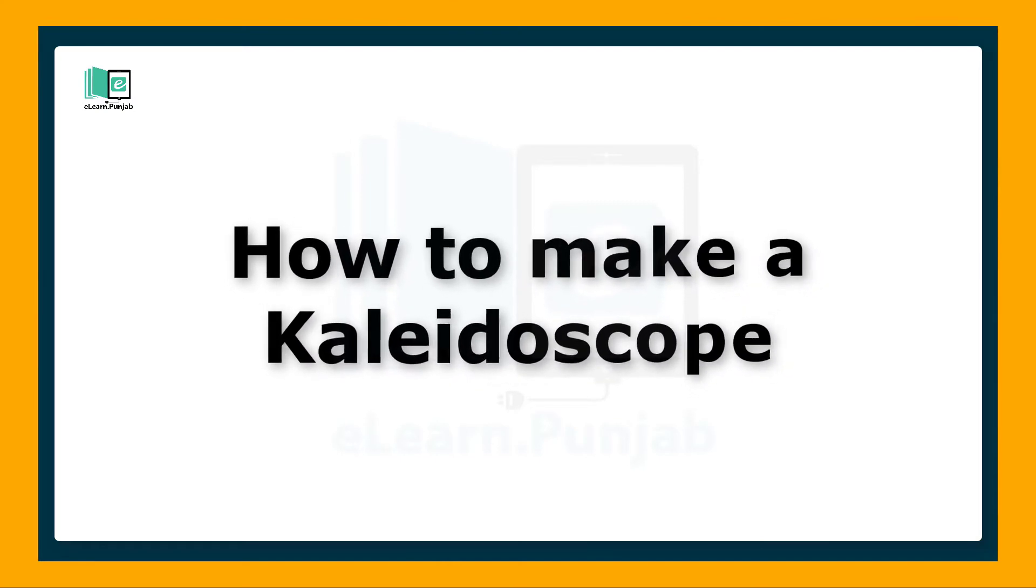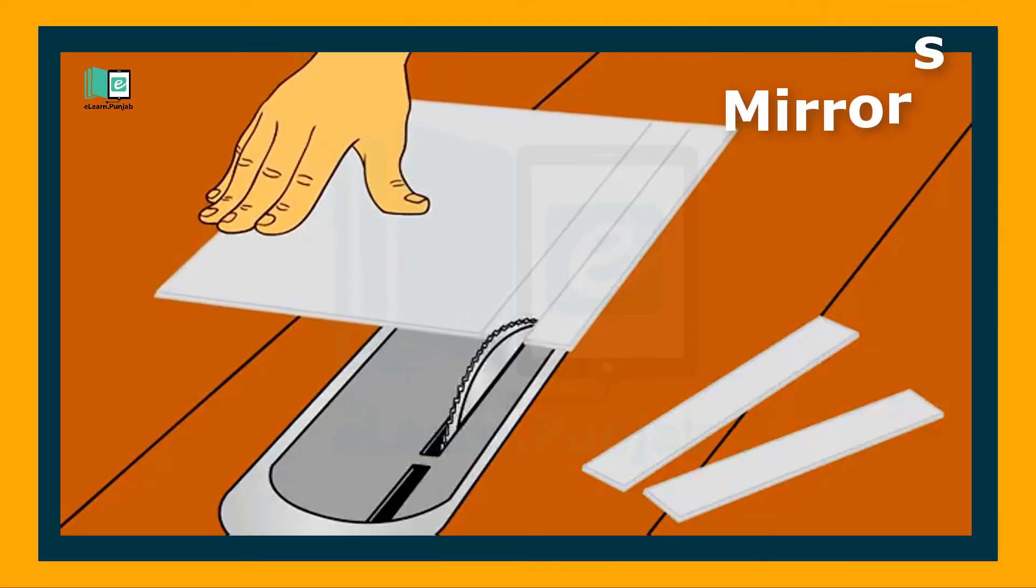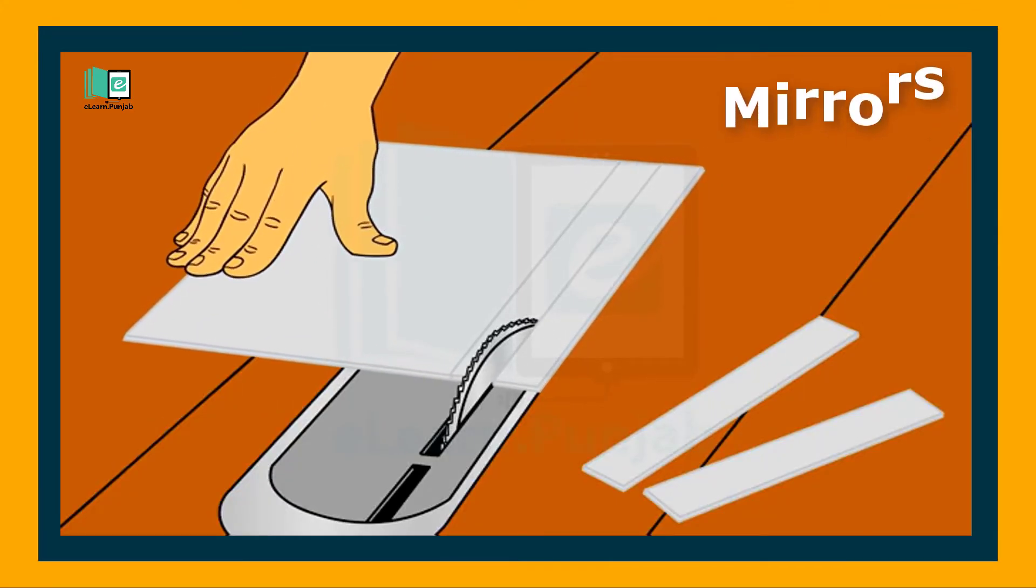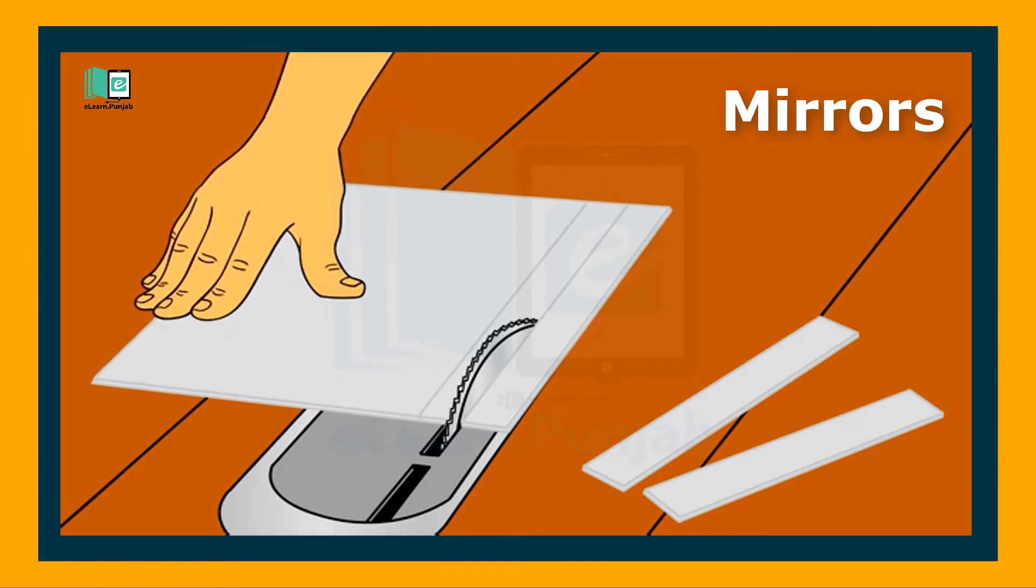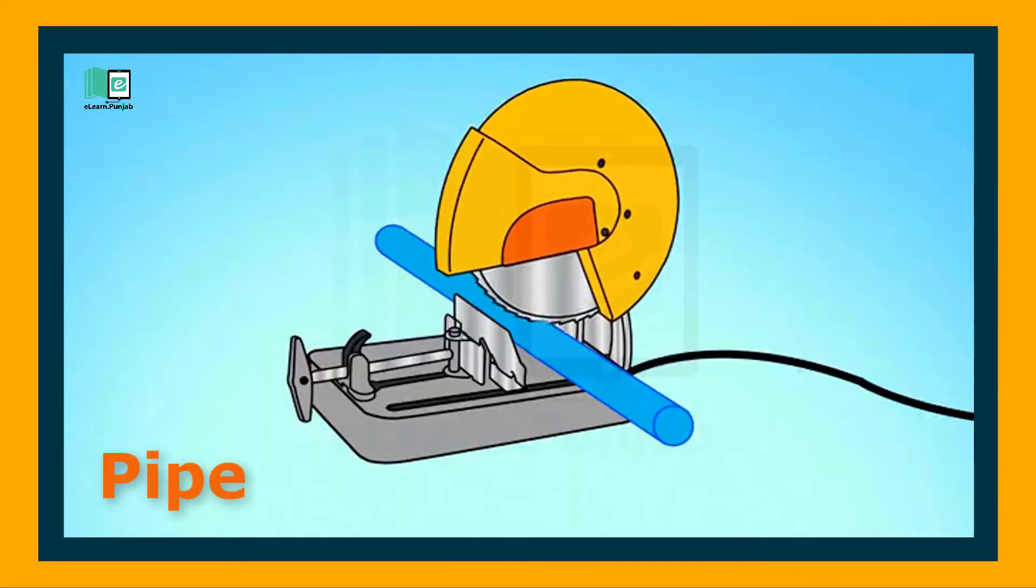How to Make a Kaleidoscope. Cut the mirrors the same size. Cut a little piece of pipe with the machine.